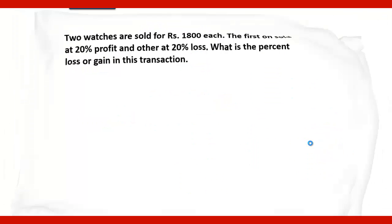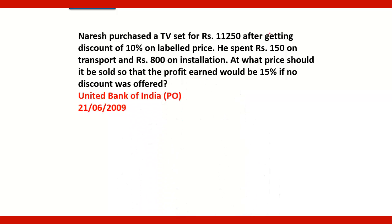Now go to the second question. Naresh purchased a TV set for Rs. 11,250 after getting a discount of 10% on the labeled price. He spent Rs. 150 on transport and Rs. 1800 on installation. At what price should it be sold so that the profit earned would be 15% if no discount was offered? This question was asked in the United Bank of India PO exam conducted on 21st June 2009. Here, Naresh purchased the TV for Rs. 11,250.